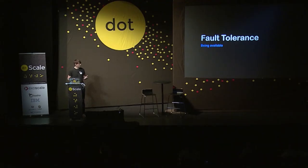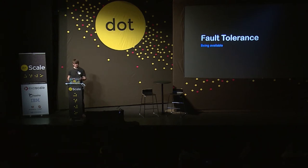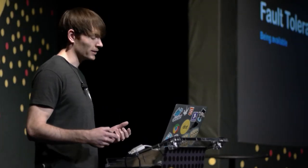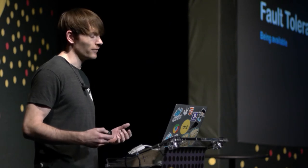How can we prevent failure to avoid unavailability? It turns out this is pretty hard, so we focus on building systems that tolerate forms of failure. Common design patterns have us build distributed systems using redundancy of hardware, software, and data to ensure failures within the service don't impact overall service availability.